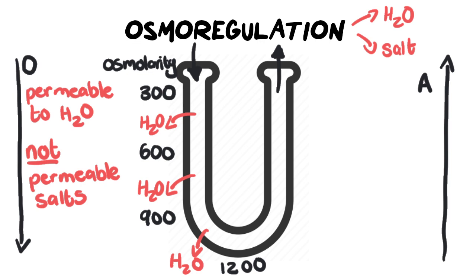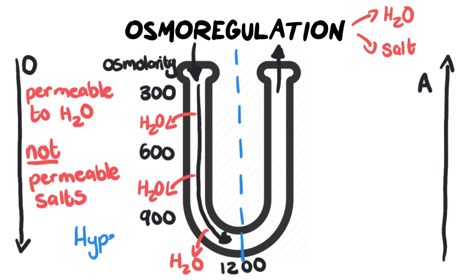As the filtrate moves down through the descending limb, its osmolarity is increasing — getting higher. To fully understand this, we need to know that the loop of Henle is divided into two zones. The left-hand zone is permeable to water and the surrounding tissues are hypertonic — high in solutes — which attracts the water out of the loop of Henle into the surrounding tissue. On the ascending side, the solution around the loop of Henle is hypotonic.